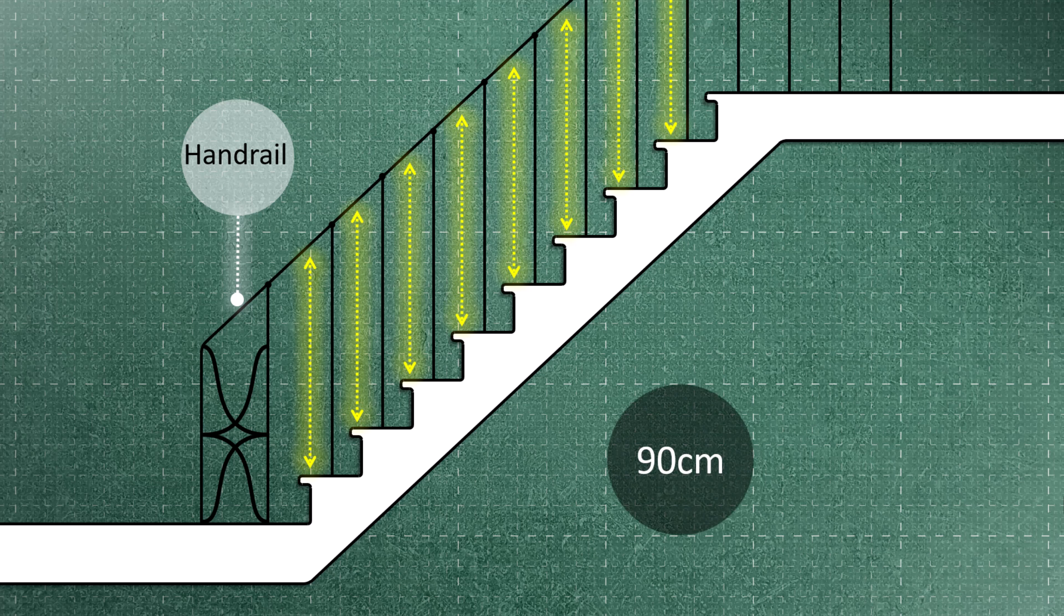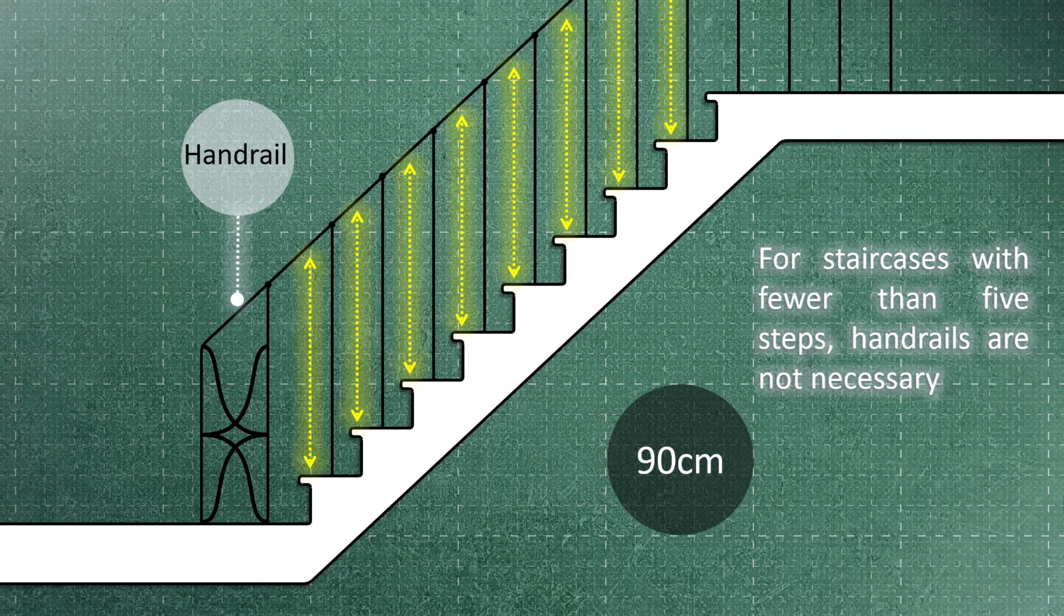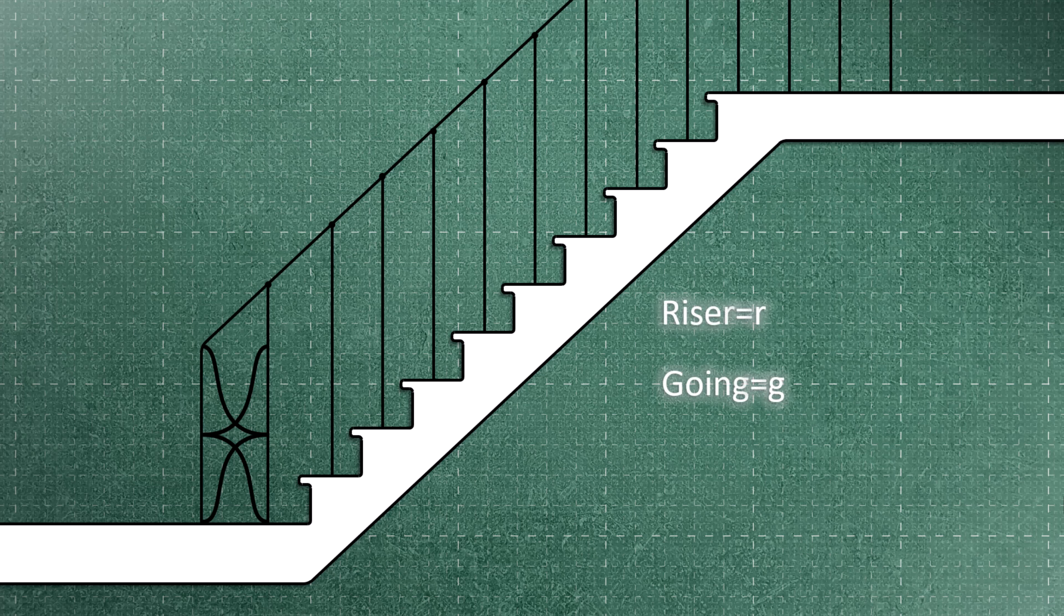For staircases with fewer than five steps, handrails are not necessary. To calculate the rise and going of the stairs, a specific formula is used as follows: the sum of twice the rise and the going of the stairs equals 60 centimeters. It is important to note that the going of the stairs should never be less than 25 centimeters.